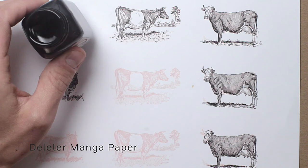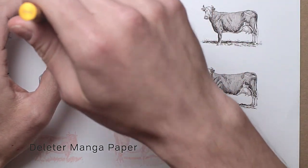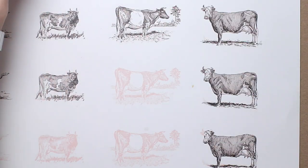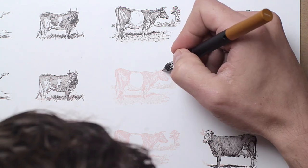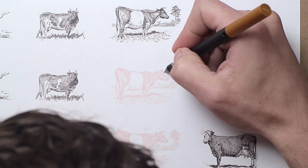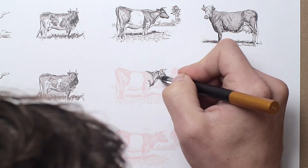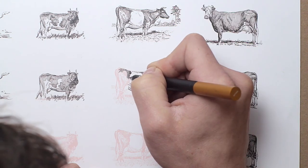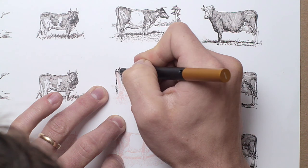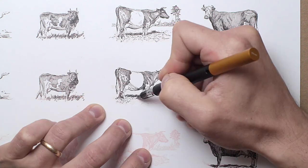In this second sample, I'm using Deleter's Manga paper and using the same ink. And again, this is just another example of how well the nib holds the ink. I was able to complete this entire drawing without having to dip the nib a second time into the ink bottle.